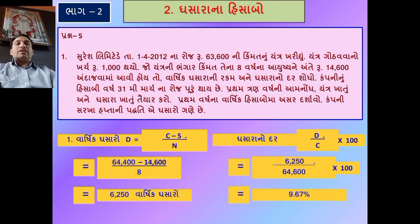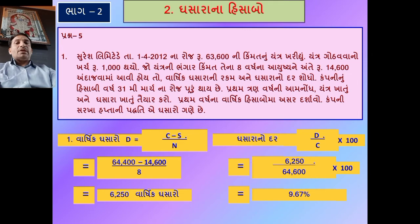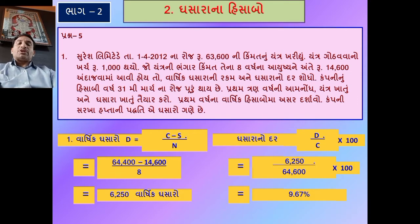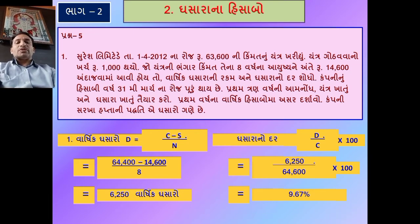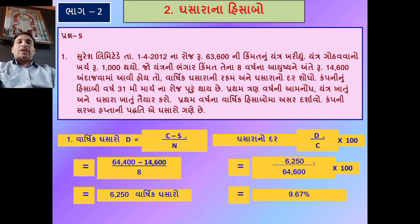દર વર્ષે ઘસારાની રકમ એક સરખી રહેશે, કારણ કે કંપની સરખા હપ્તાની પદ્ધતિ (Straight Line Method) થી ઘસારો ગણે છે એવી સૂચના આપેલ છે. દર વર્ષે 6,250 ઘસારો ગણવાનો રહેશે. આ પ્રથમ ત્રણ વર્ષ માટે આમનોંધ તૈયાર કરવા પાઠ્ય પુસ્તક નજર સમક્ષ રાખો.